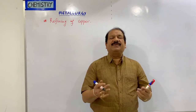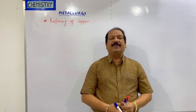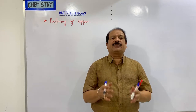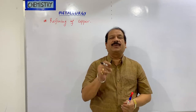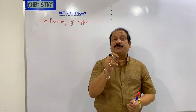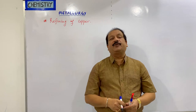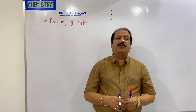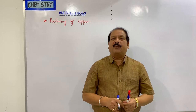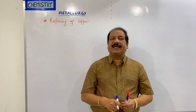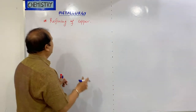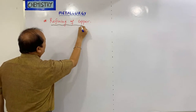From the Bessemer converter, we get blister copper. Blister copper has 2% impurity. We will remove this 2% impurity. We will follow two processes in refining of copper: one is poling and one is electrolytic refining. Here we will see the refining of copper.